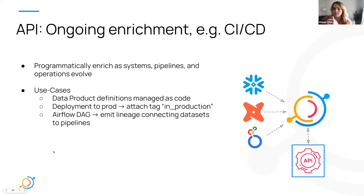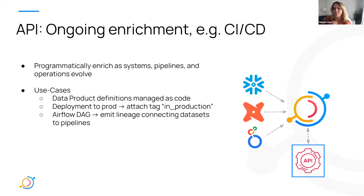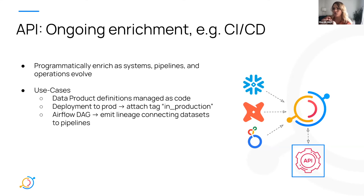API enrichment is more of an ongoing or programmatic approach. It's really great when folks are starting to manage definitions as code — as those definitions evolve, you can emit changes back into DataHub. Maybe you have predictable deployment processes going from testing to staging to production; you can programmatically emit a tag saying 'now it's in production' without manually tracking deployments. This is also relevant to circuit breaking — as your DAGs and relationships evolve, you can emit lineage edges and manage these things as pipelines evolve over time.